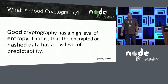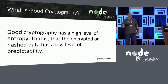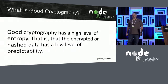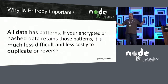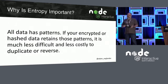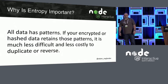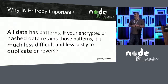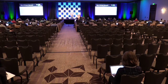Good cryptography has a high level of entropy — that's a great buzzword in the crypto world. But what it really means is that encrypted or hashed data has a low level of predictability. You're trying to reduce patterns. But all data has patterns, and that's why entropy is important. If you're talking about passwords, there's this thing called the top 100 passwords, and those top 100 passwords comprise about 10% of everyone's passwords. Whichever ones you tell them they can't use, they go find other ones. You'll have common dates that people use for birth dates, things like that.